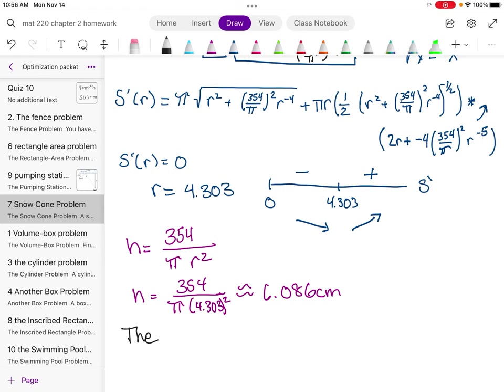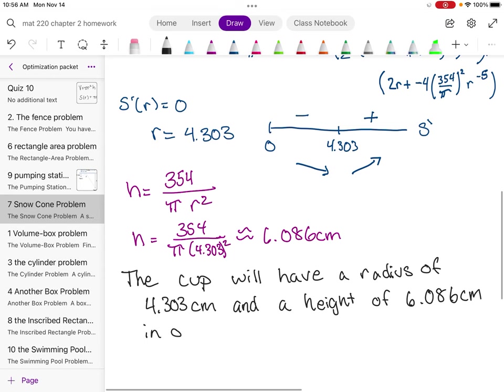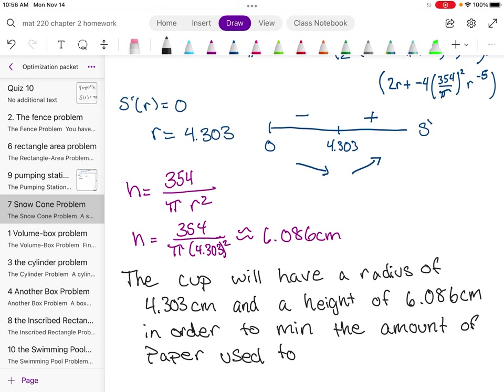The cup will have a radius of 4.303 centimeters and a height of 6.086 centimeters in order to minimize the amount of paper used to create the cup.